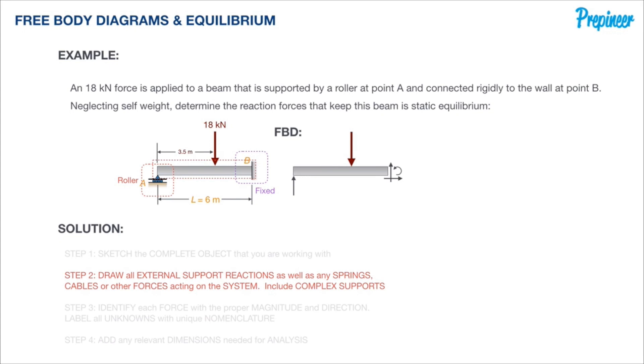Now point B has a rigid connection to the wall, a fixed connection. Either way, the support reaction restrains both the translations in addition to the rotation.